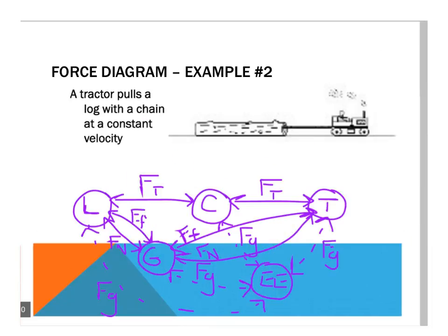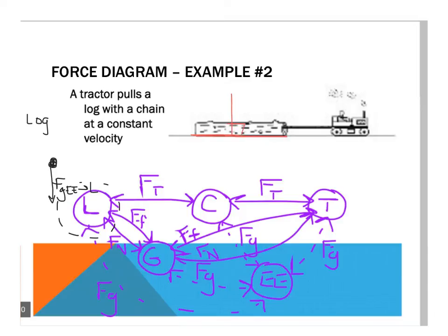Let's look at a second example. Here we could do a force diagram for the log, the chain, or the tractor. We are going to start with the log. It's also nice to label the force diagram with what object it is for. Again, I like to start with the force of gravity — it's always going to be directed towards the center of the earth, which will generally be down — the force of gravity that the entire earth applies to the log. Normal force means perpendicular to the two surfaces: the log and the ground, so perpendicular to that would be up. The normal force will be up — the ground applies that to the log.